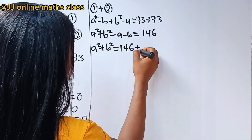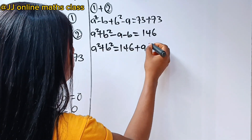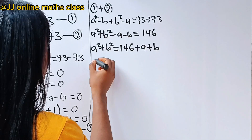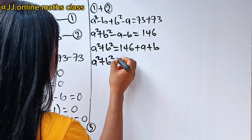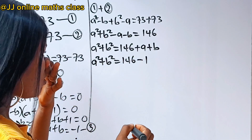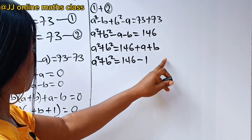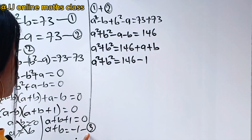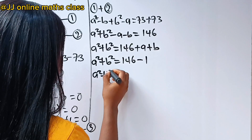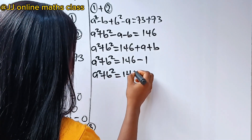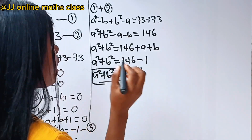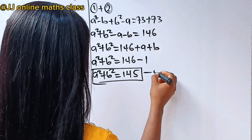So a squared plus b squared equals 146, and when a and b cross over they become positive, giving a squared plus b squared equals 146 plus a plus b. Since a plus b equals minus 1 from equation 3, we get a squared plus b squared equals 145. Let's call this equation 4.